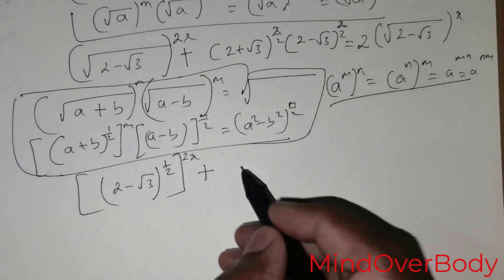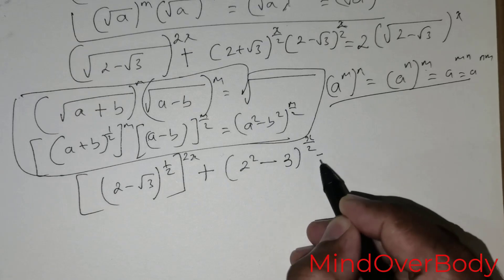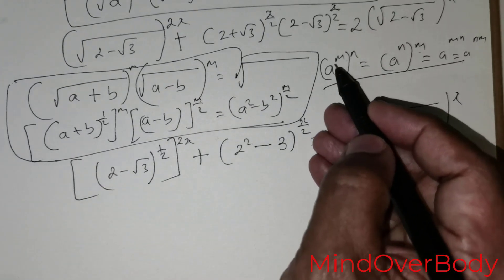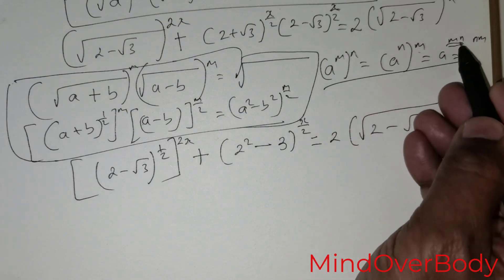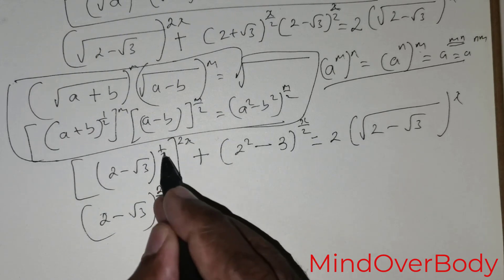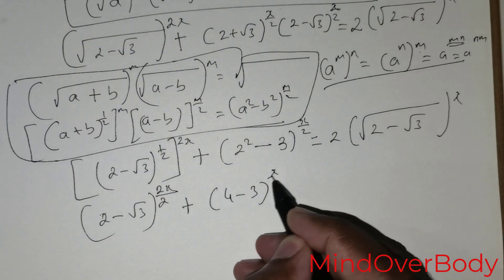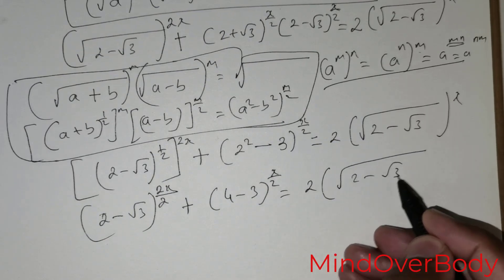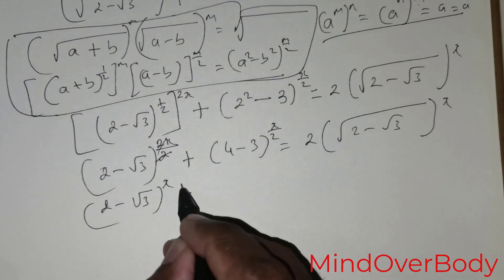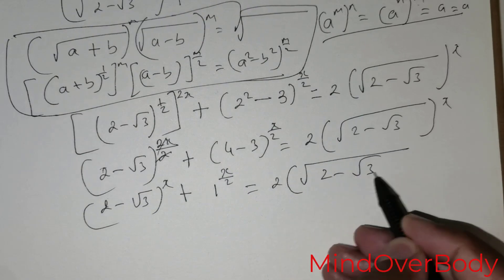So this becomes: (2 - root 3) raised to the power x, plus (2² - (root 3)²) raised to the power x/2, equals 2 times root of (2 - root 3) raised to the power x. Now 2 times 1/2 simplifies so the 2s cancel, and 4 minus 3 equals 1, giving 1 raised to the power x/2, equals 2 times square root of (2 - root 3) raised to the power x.